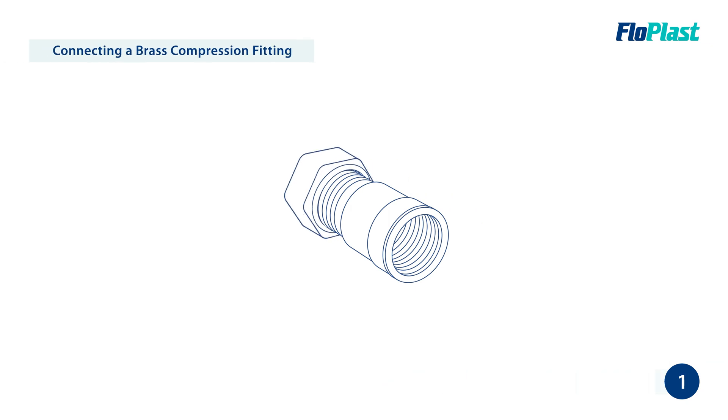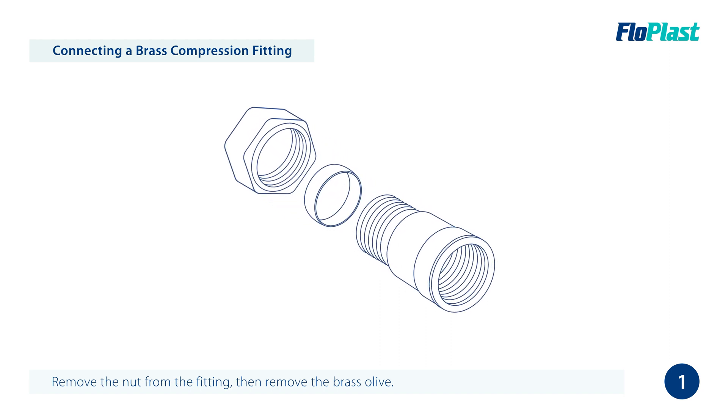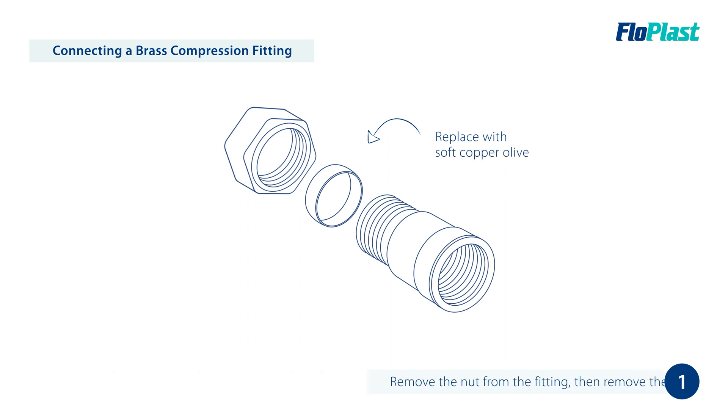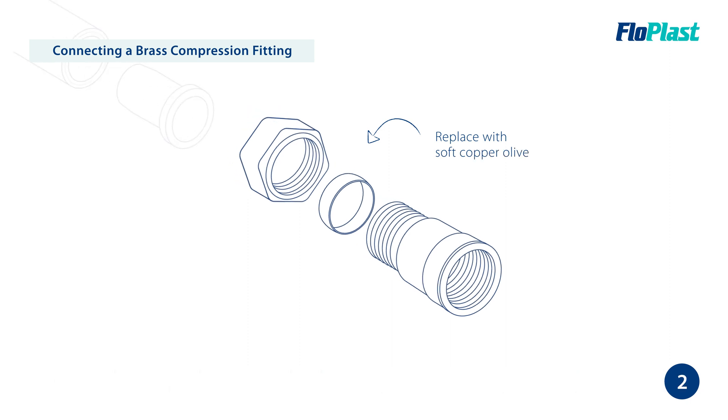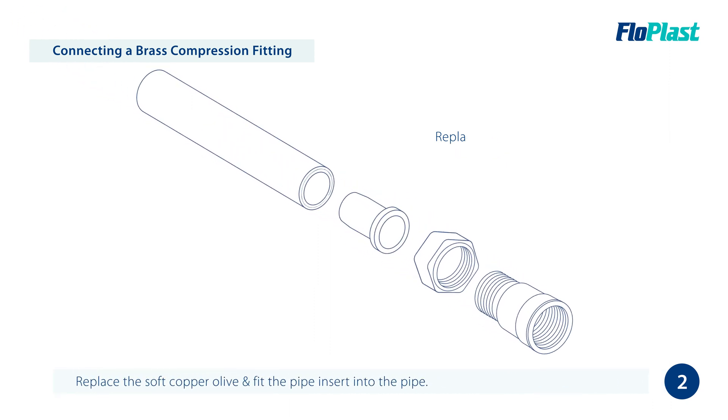When installing the pipe to a brass compression fitting, to begin with, remove the nut. You then need to remove the brass olive. Note that to connect to a brass copper fitting, a soft copper olive must be used. Within the brass fitting, replace with the soft copper olive.